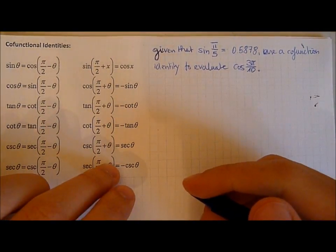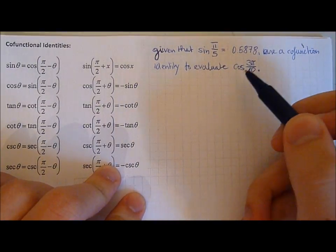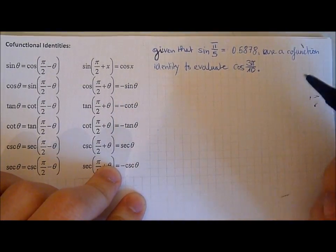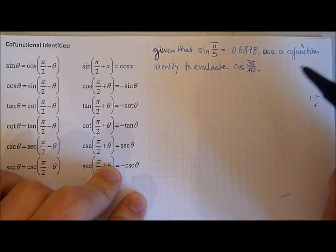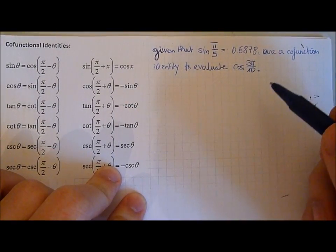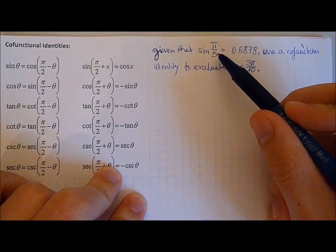Now let's start with example 1. Given that sin pi over 5 is equal to 0.5878 use a cofunction identity to evaluate cos 3 pi over 10. Now we basically have to convert cos 3 pi over 10 into sin pi over 5.